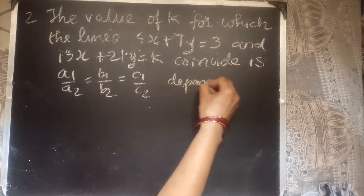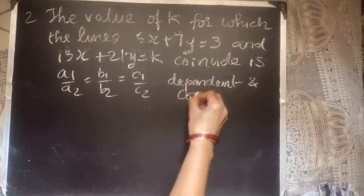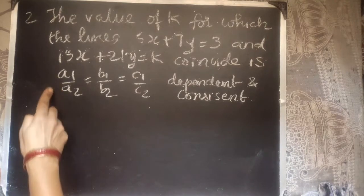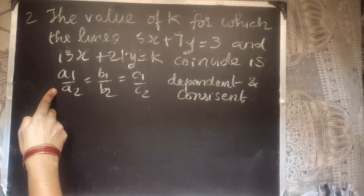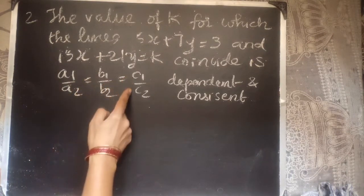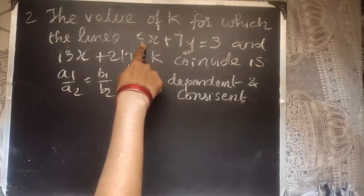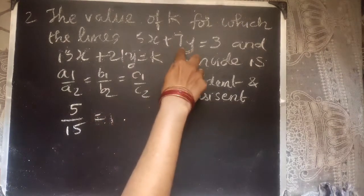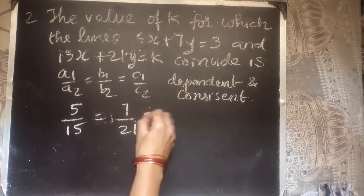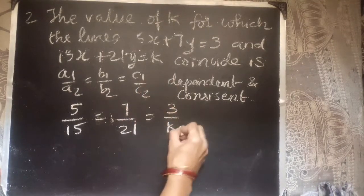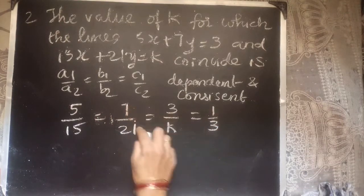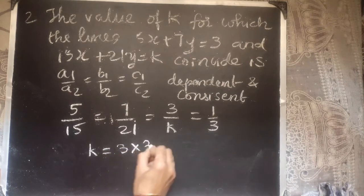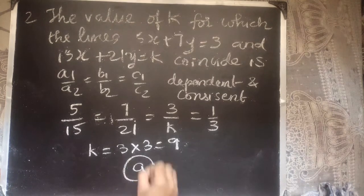These lines are called dependent and consistent, meaning they have infinitely many solutions. A1 is the coefficient of X in the first line, A2 from the second line. So 5/15 = 7/21 = 3/K. Both 5/15 and 7/21 simplify to 1/3. Cross multiplying: K × 1 = 3 × 3 = 9. Hence option A is the correct answer.